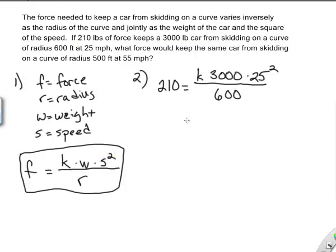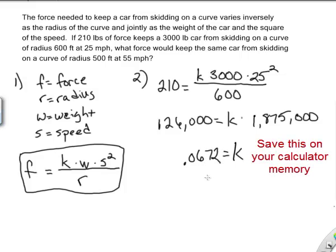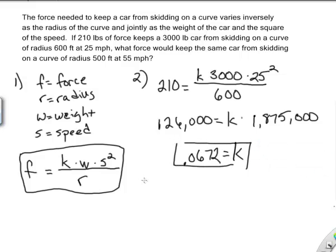So now we need to solve this for k, and so I'm going to multiply both sides by 600, and I get 126,000 equals k times, and I go ahead and multiply this out, and I ended up with 1,875,000. So 1,875,000. And when I divide both sides by that 1,875,000, I end up with k is equal to 0.0672. And so I found my k.